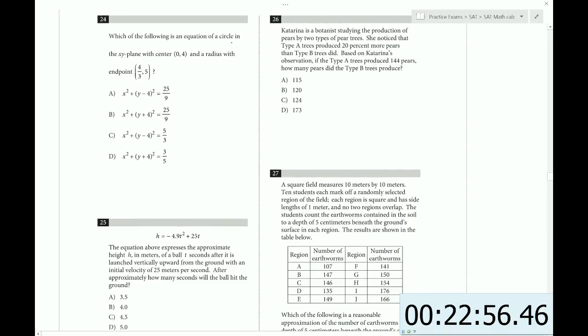Which of the following is an equation of a circle in the xy plane with center (0, 4) and radius with endpoints of this? So center (0, 4), this one matches up correctly. This is going to be negative 4, no good. (0, 4), yes.